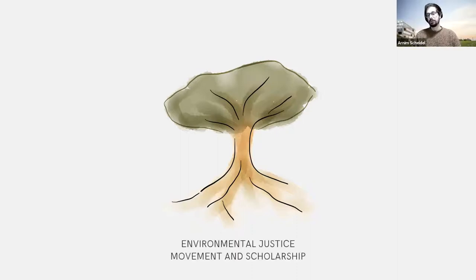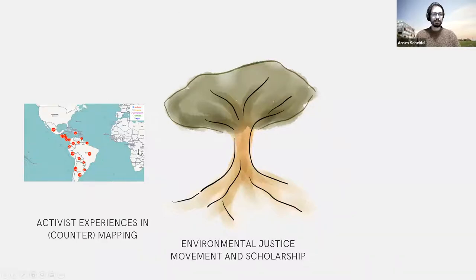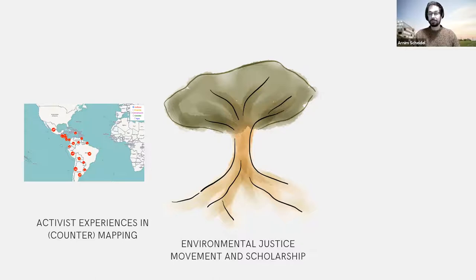One very important inspiration for the EJ Atlas was clearly the environmental justice movement and environmental justice as a scholarship, and the importance of looking at issues of distribution in environmental benefits and burdens that arise in projects. A second quite important source of inspiration were previous experiences in mapping of conflictive projects. Activist experiences are much older than the EJ Atlas — organizations like RAIN, the World Rainforest Movement, Oil Watch, or OCMAL, the Latin American Observatory of Mining Conflicts, have been mapping conflictive projects for quite a while.